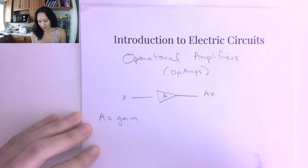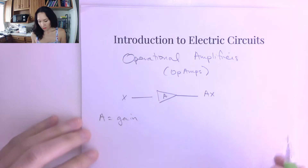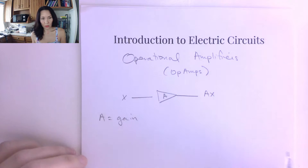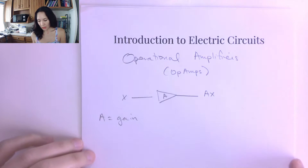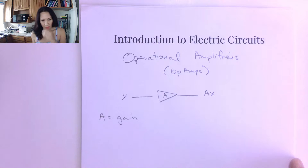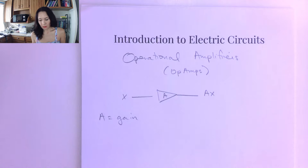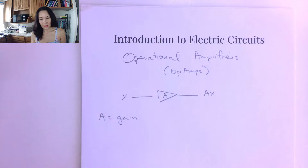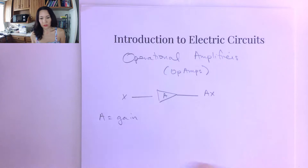The gain can be a whole number or a fraction. The op amp can be used to magnify a signal, add signals, subtract, divide — you can even use it to differentiate and integrate.